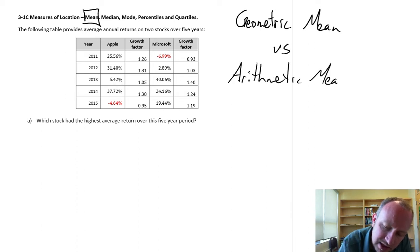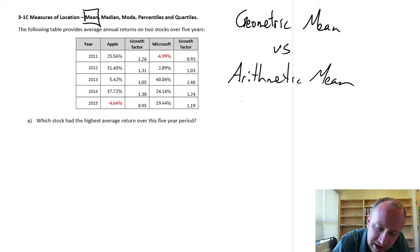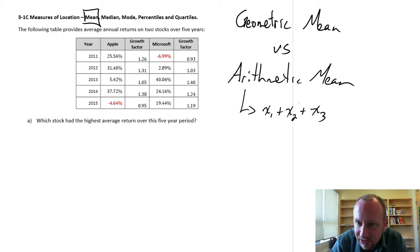Now the arithmetic mean is the one that you're probably most familiar with. An arithmetic mean is where you're adding together numbers. Let's say I have three observations, so I add together those three observations and I divide by 3, and this gives me my arithmetic mean, often denoted as x bar.